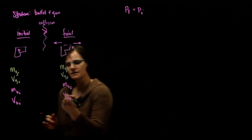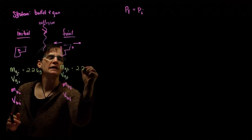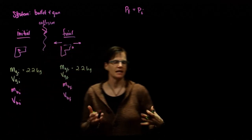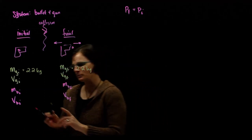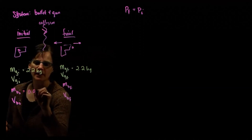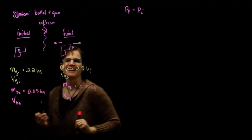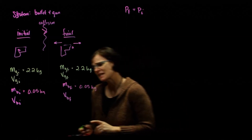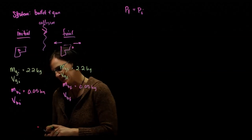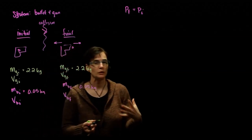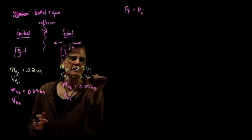The mass of the gun is 2.2 kilograms, and that's true for both the initial and final condition. The problem doesn't indicate that any mass has been lost in either of these two objects. The mass of our bullet is 0.05 kilograms, both in the initial and final condition. The gun has a recoil speed of 3.36 meters per second after the collision — that's in the final state.